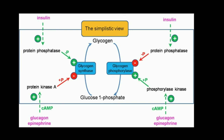Welcome back. In this video, we're going to talk about the control of glycogen metabolism. I want to do some quick review here. Remember that if I want to convert glycogen and break it down to glucose 1-phosphate monomers, that's through the enzyme glycogen phosphorylase. If I want to go the reverse direction and go from glucose 1-phosphate to glycogen, the anabolic direction, that's through the action of glycogen synthase.